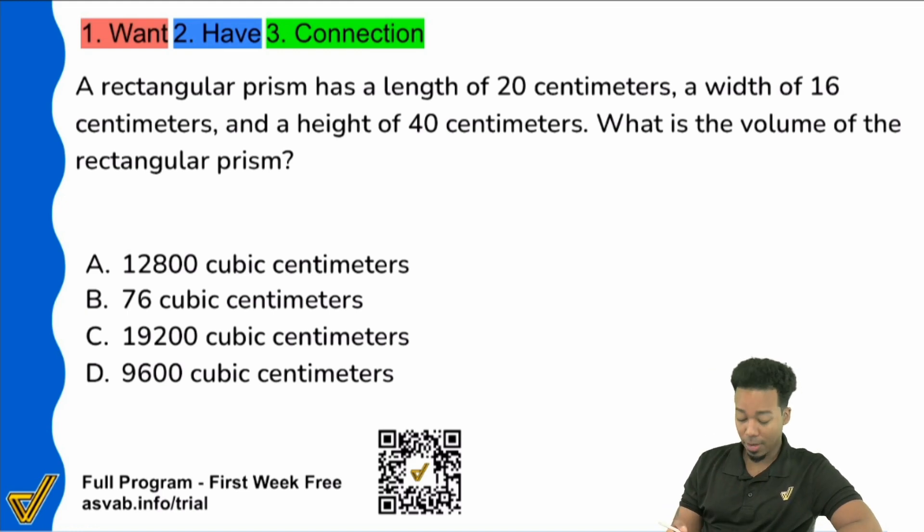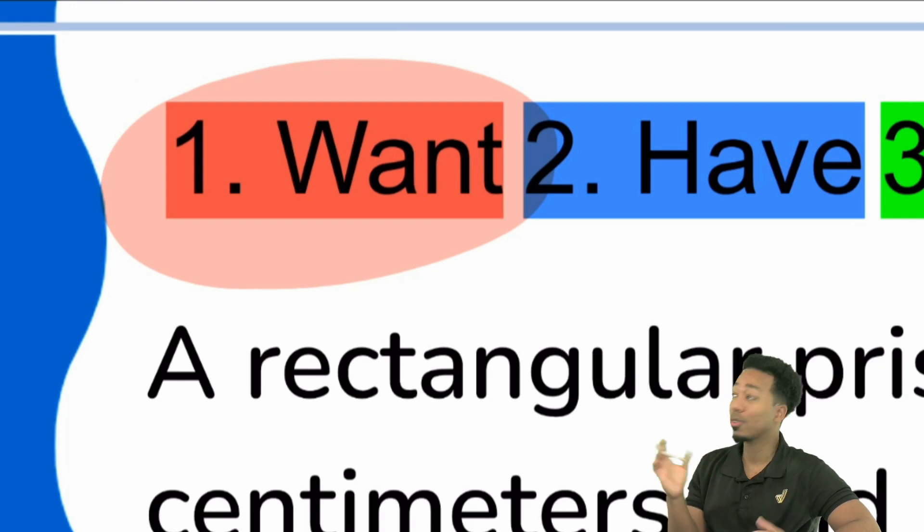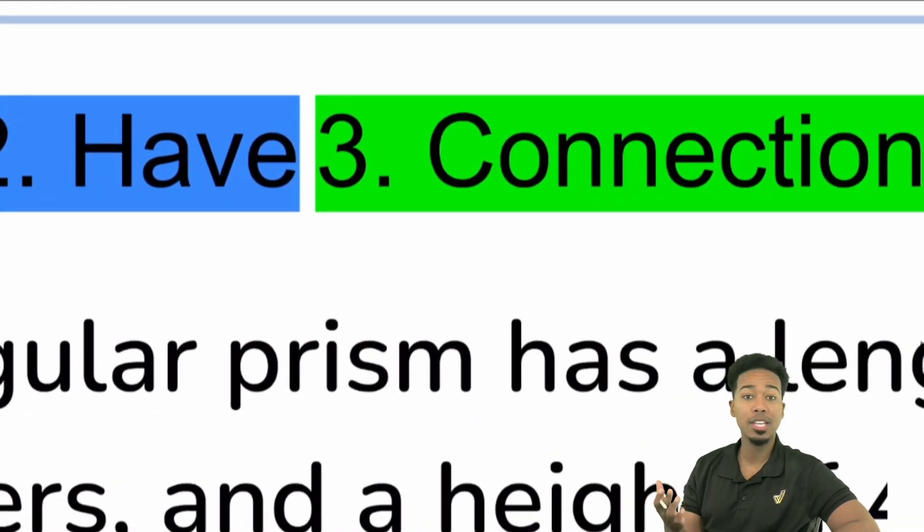So first things first, if you've seen any of my videos before, what's the first thing you do with a word problem? You always start with a question. You always start with what you want. I'm going to label this in almost every video. What do you want? What do you have? And what's the connection? That's the three steps to word problem success.